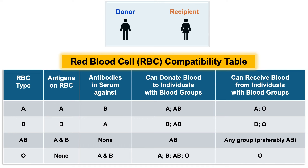Lastly, individuals with blood group O lack both A and B antigens on their RBCs, and their blood serum contains anti-A and anti-B antibodies. Consequently, those with blood group O can receive blood solely from individuals of group O, but can donate blood to individuals of any ABO blood group: A, B, O, or AB.